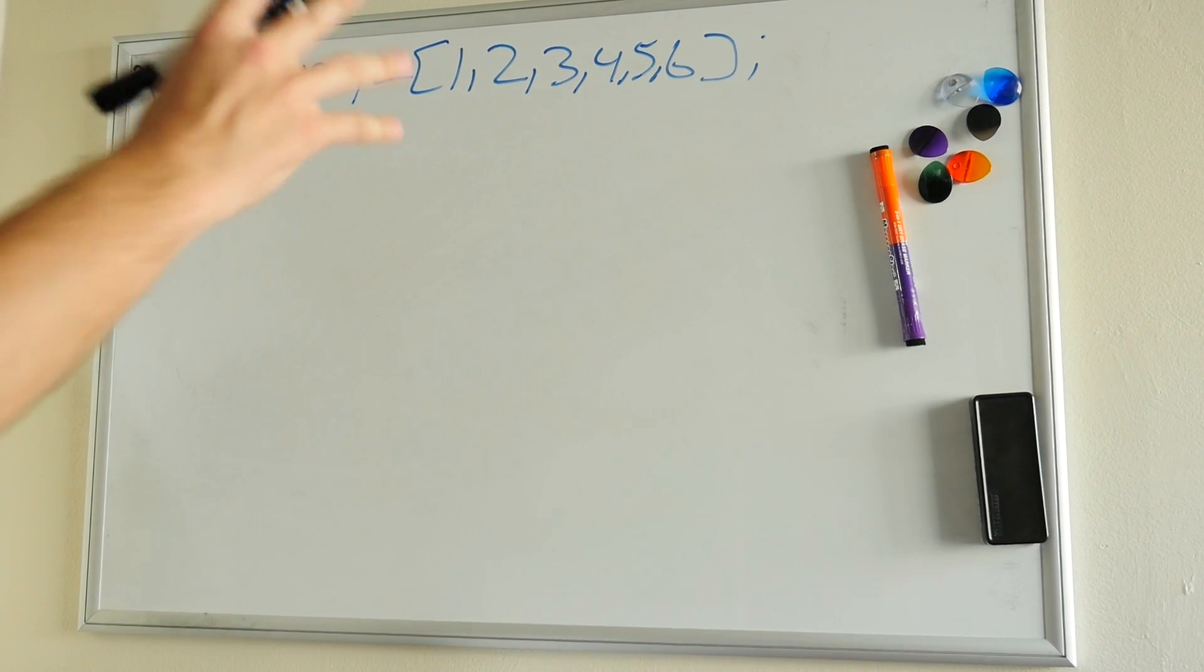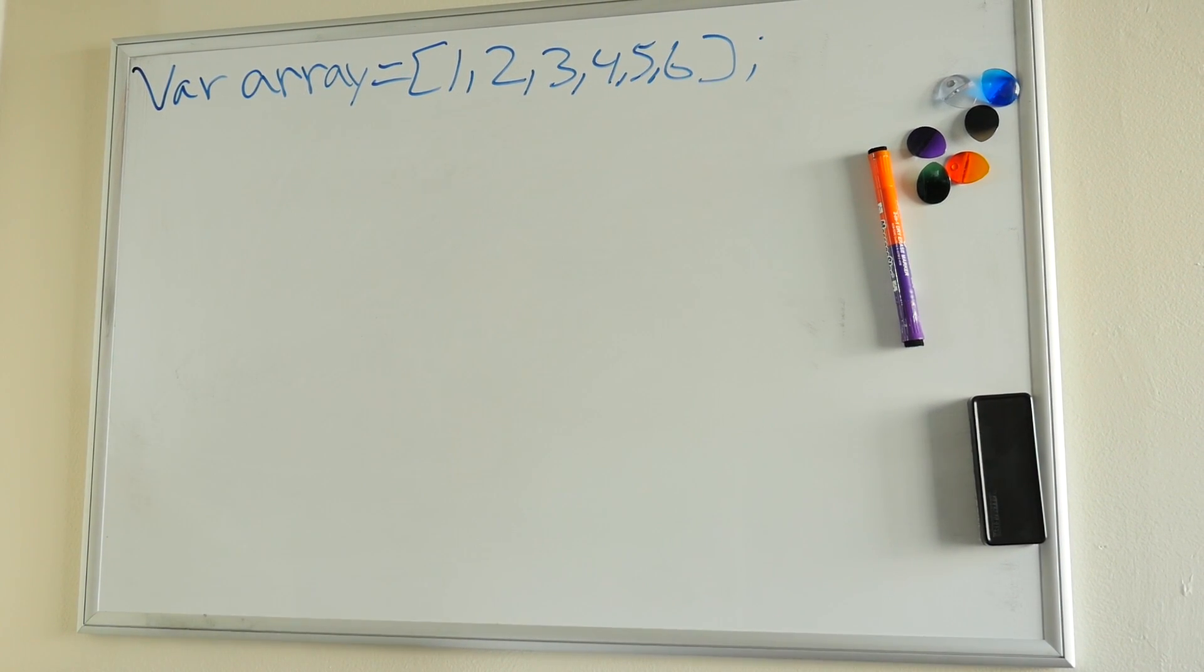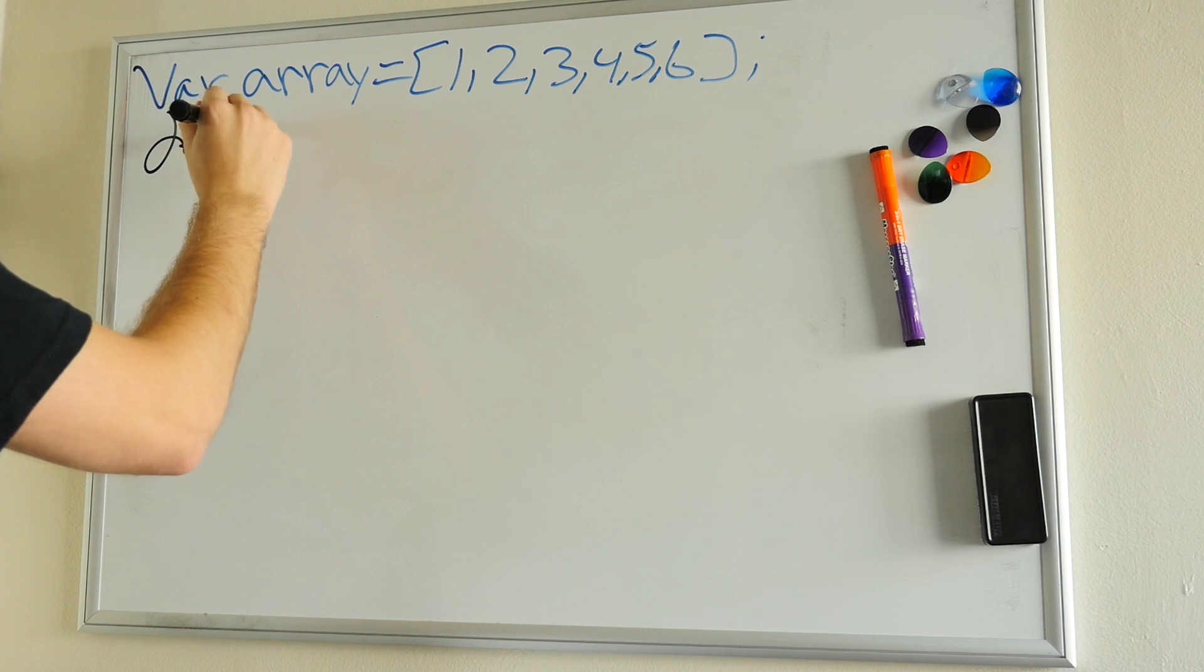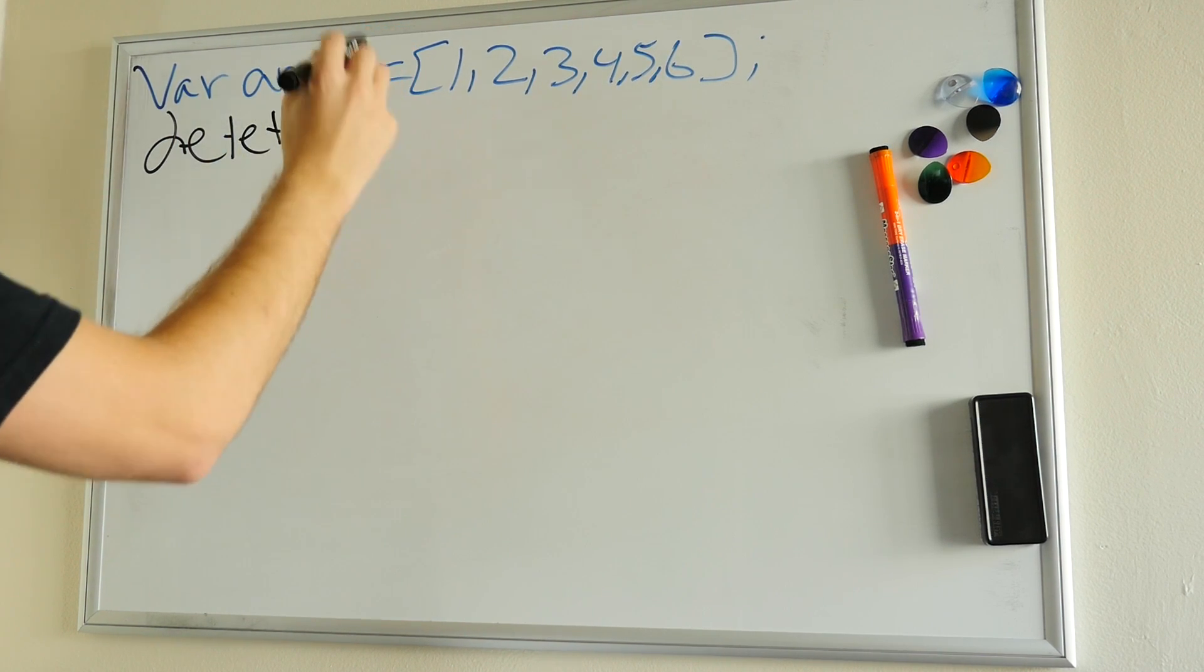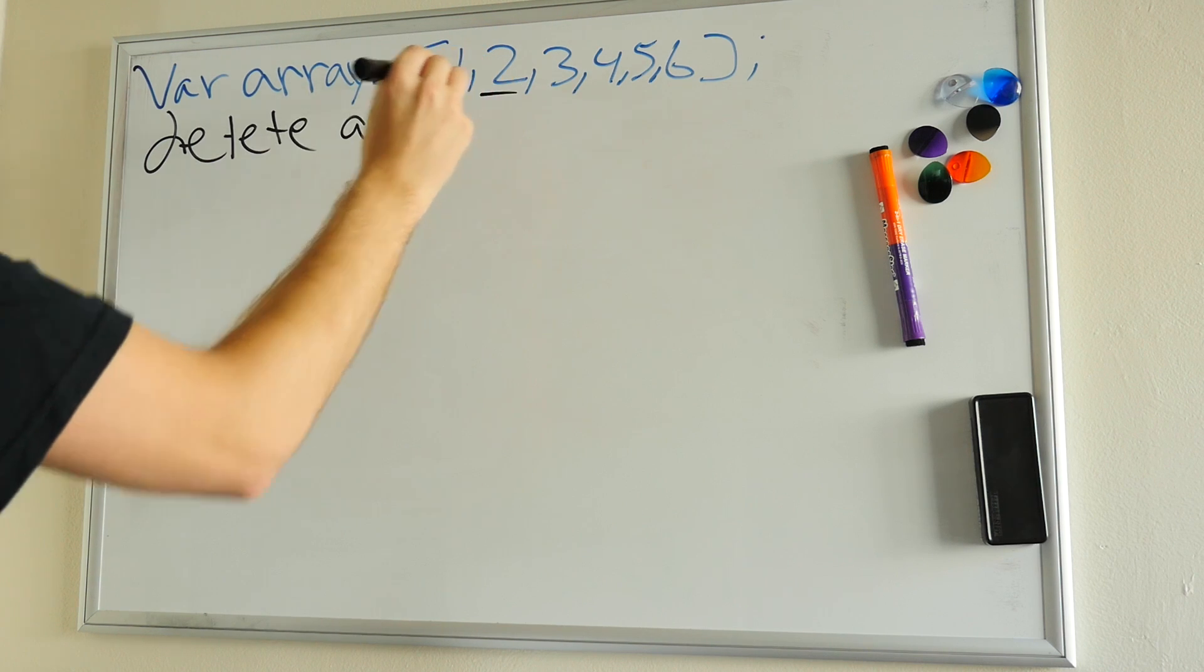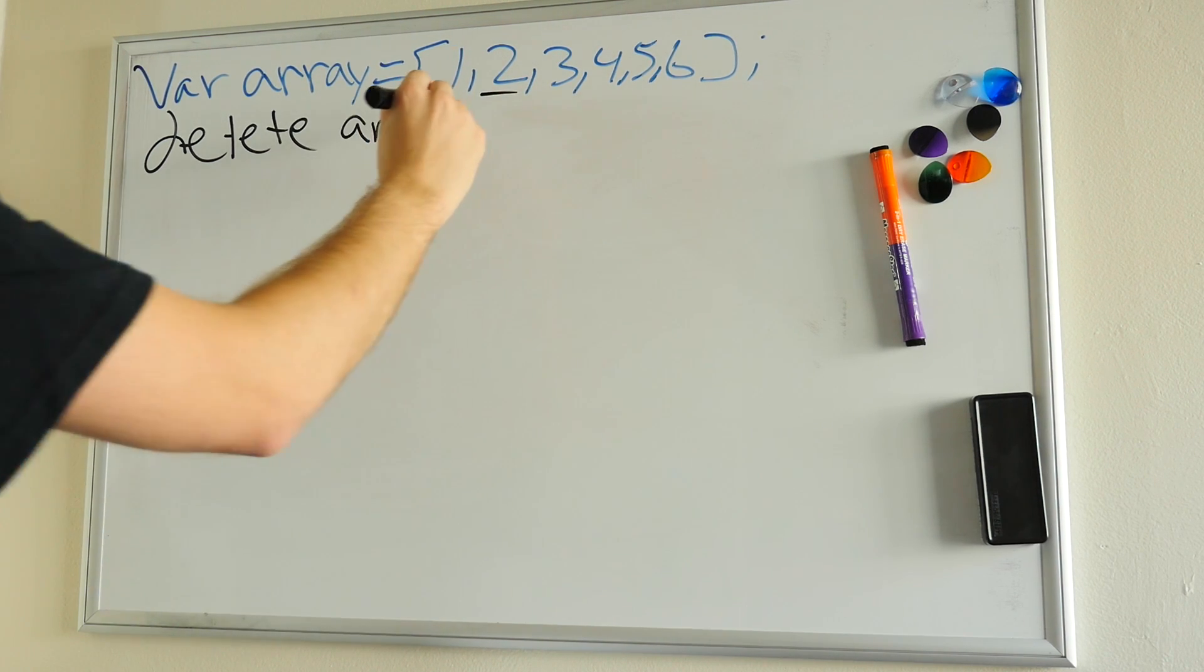So we're going to talk about how to add stuff to an array in the middle of the array and delete things from the array. So first thing to keep in mind is you may understand, you may know that delete, delete, and then call out the array at let's just say this 2, the 1 index spot at 2.